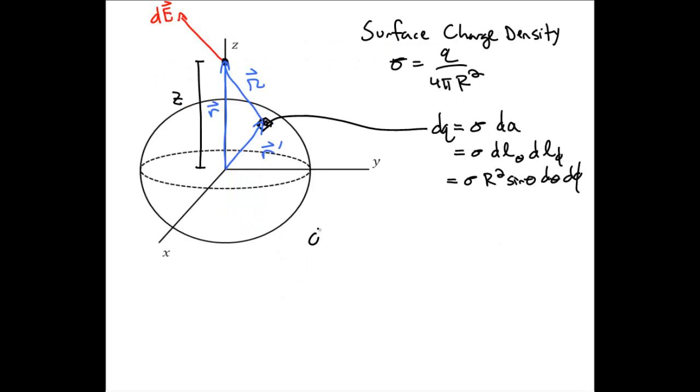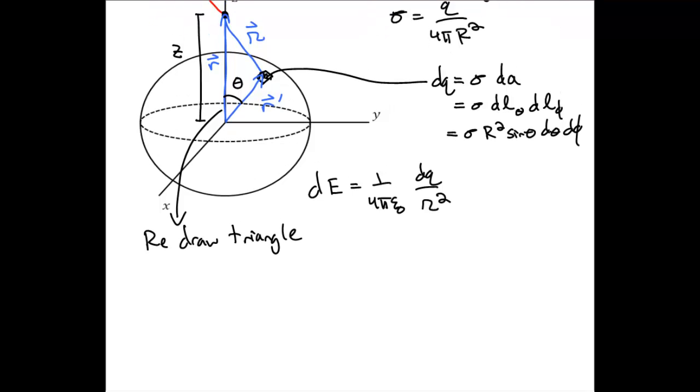And so the little bit of electric field, the magnitude of that, will be the usual electric field due to a point charge. In order to figure out the little bit of electric field produced by this little bit of charge, we need to figure out what curly r is for this little bit of charge. And so we will first need to label on our diagram the angle theta in spherical coordinates, and then we can redraw this triangle to look like this in terms of the magnitudes of the different legs.